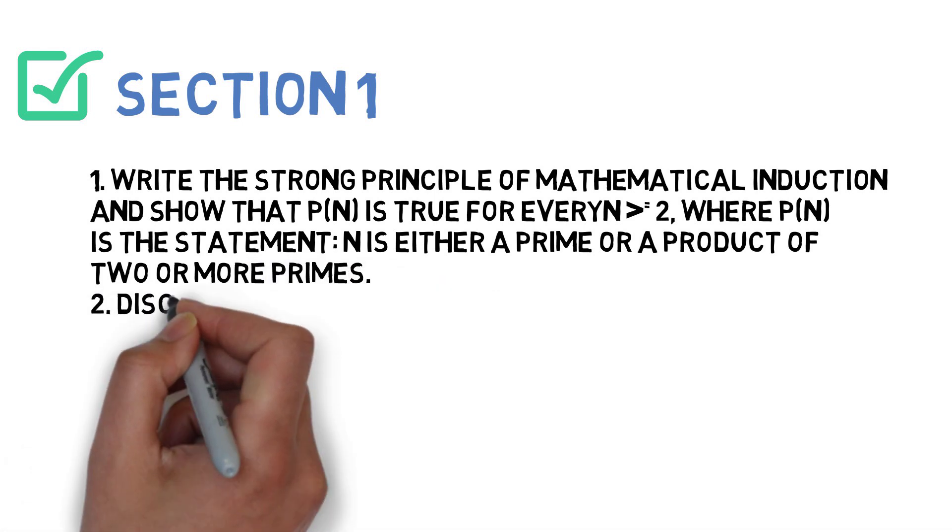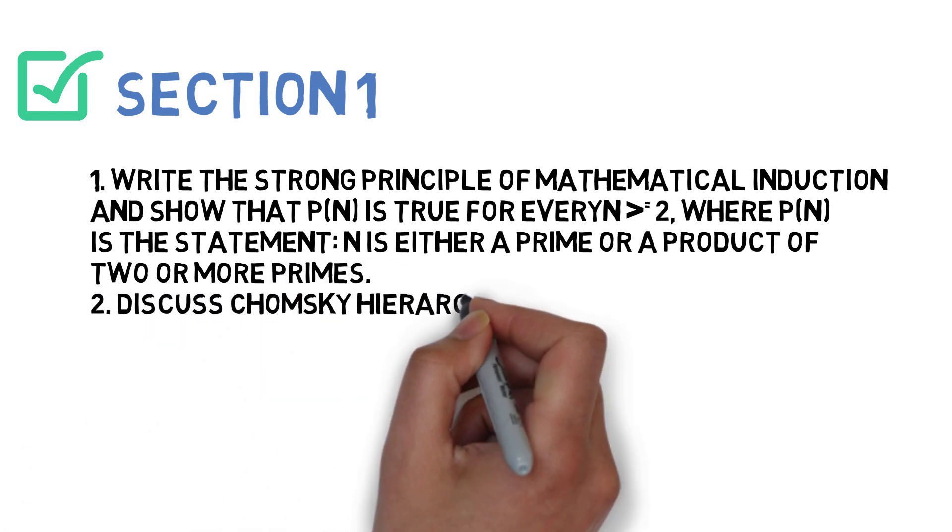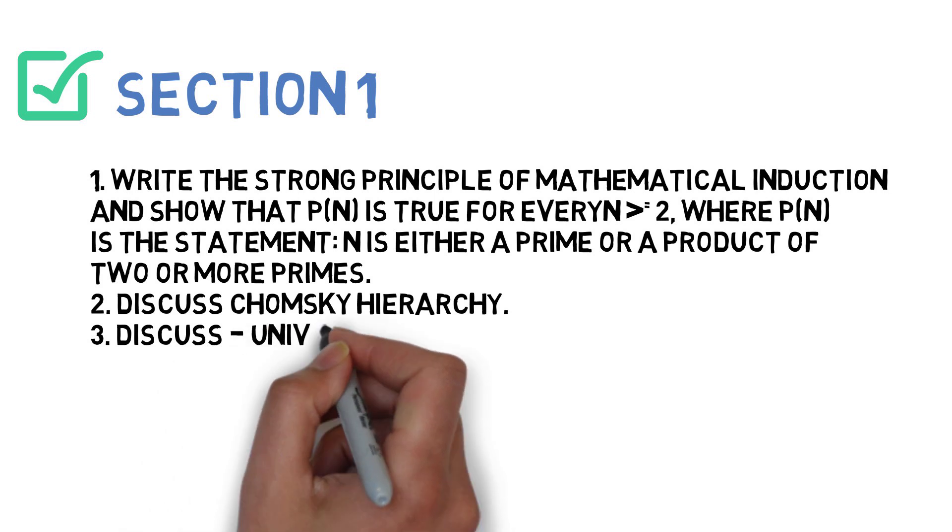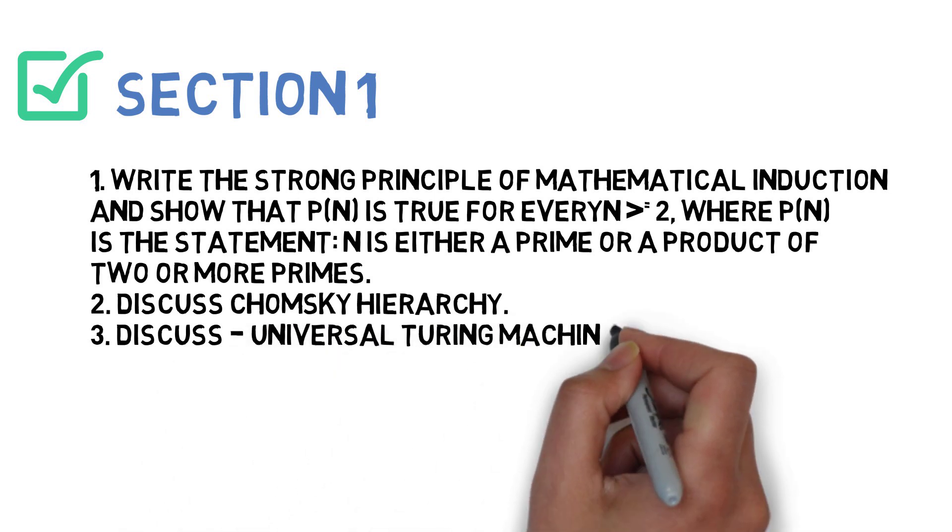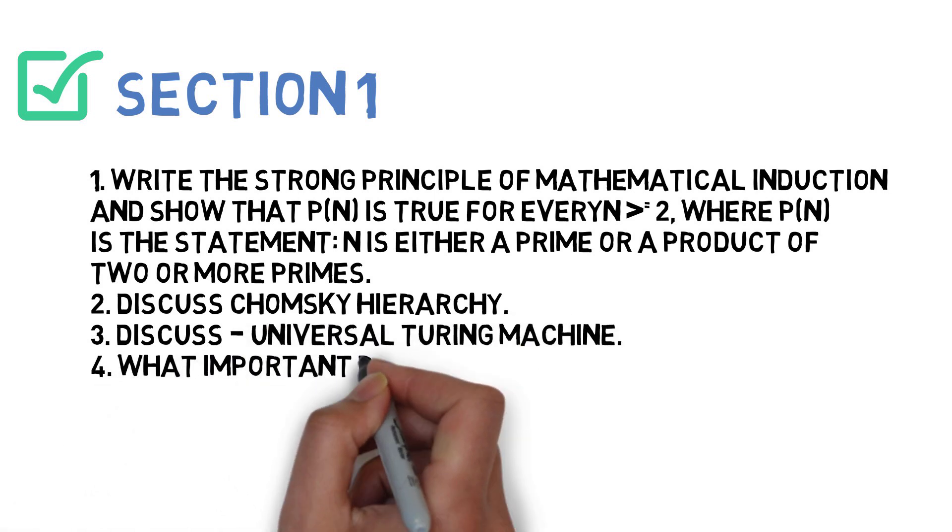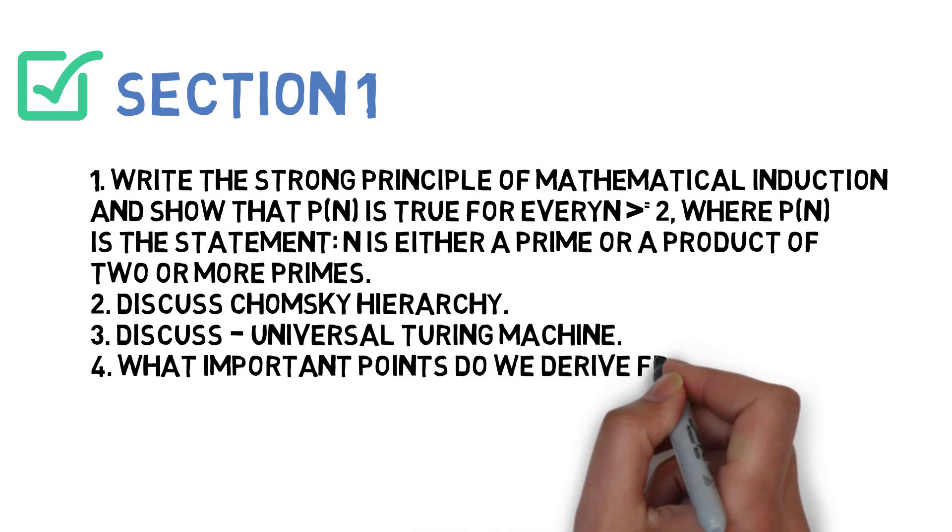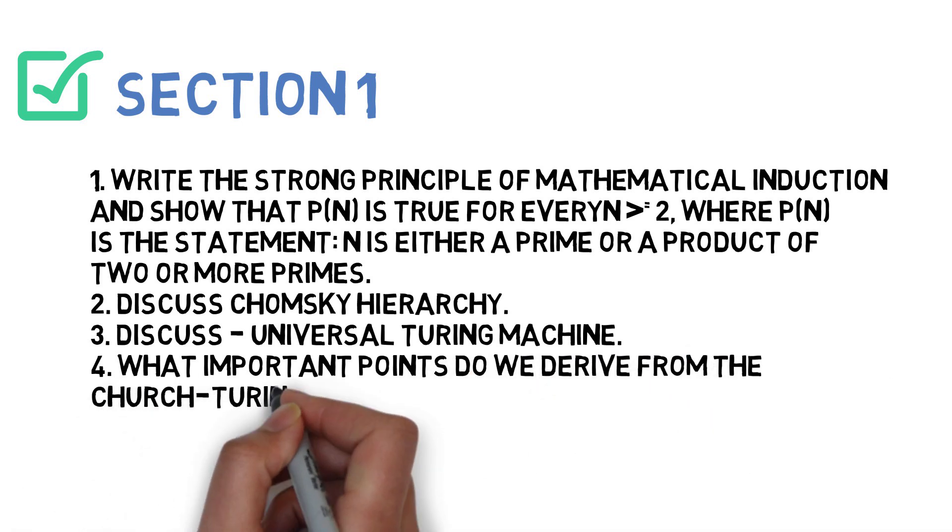Next is discuss about the Chomsky hierarchy. Next is discuss about universal Turing machine. Next is what are the important points we derive from Church-Turing thesis. So these four questions you'll be doing for Section 1.